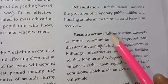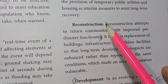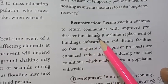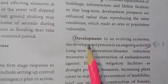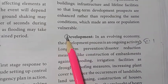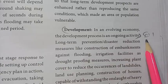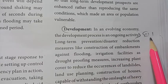Post-disaster phase includes rehabilitation, reconstruction, and restoring functioning. Finally, development — write two lines about ongoing activity. This completes the disaster management cycle answer.